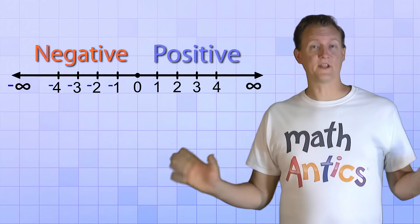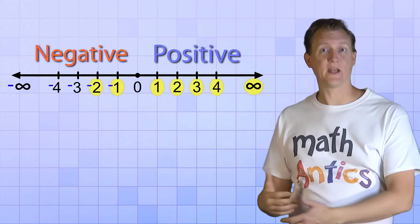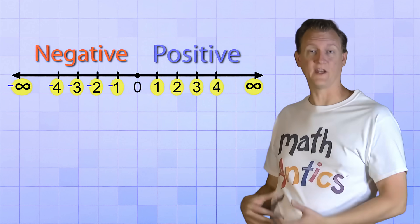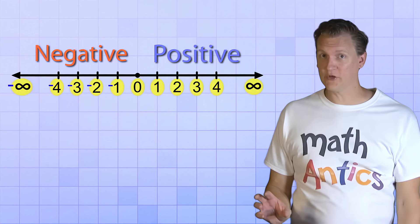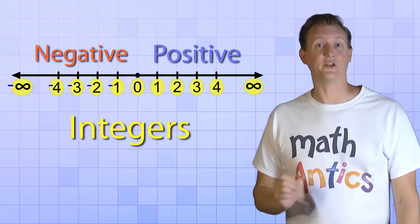By the way, when you combine all these numbers: 1, 2, 3 and so on up to infinity, and negative 1, negative 2, negative 3 and so on down to negative infinity, and the number 0, that entire set of numbers gets a special name in math. They're called the integers.